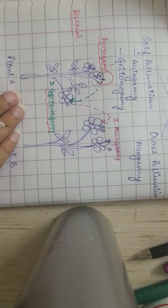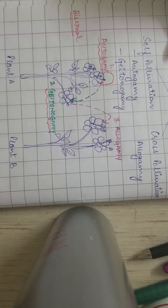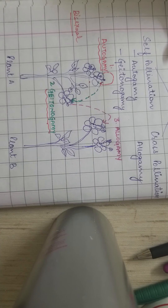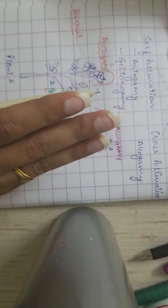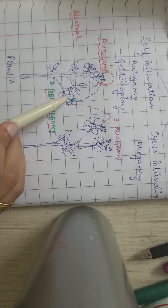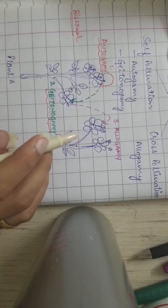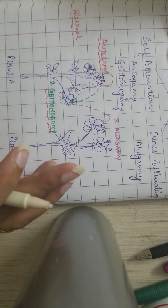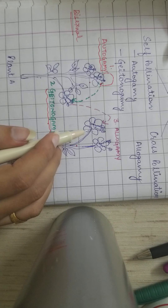What are the disadvantages of cross-pollination? Pollination is not always certain, because for cross-pollination to take place an agent is required — if that agent is not available at the proper time, pollination will not take place. They also require a large number of pollen grains because pollen has to be transferred from one plant to another, so a large quantity of pollen grains is required.